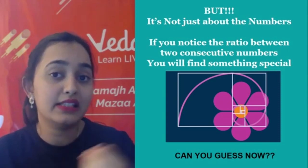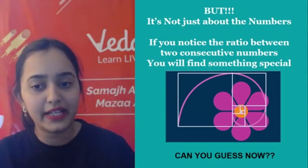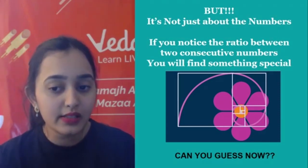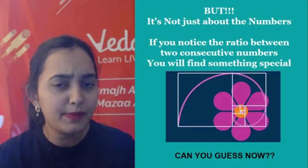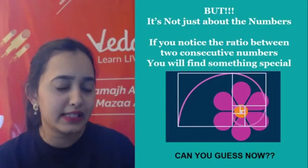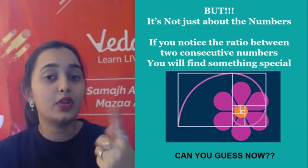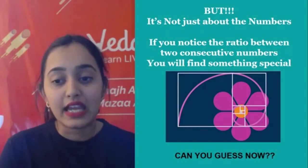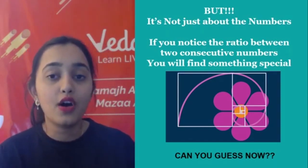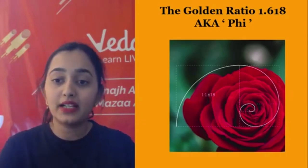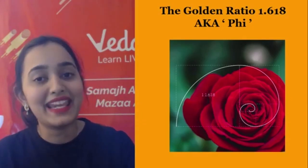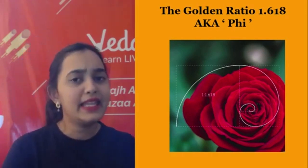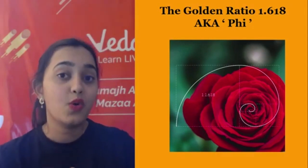But the Fibonacci sequence is not just about the numbers 0, 1, 2, 3, 5, 8. There is something even more special. When we observe the ratio between two consecutive Fibonacci numbers, we see something extraordinary. Can you guess from this diagram what that special thing is? Well, the ratio between two consecutive Fibonacci numbers is nothing but 1.618 — aka the Golden Ratio, or Phi (φ). Do you remember Phi? Let me explain what this Golden Ratio is.